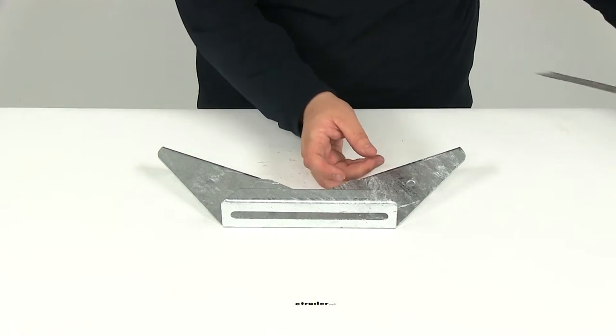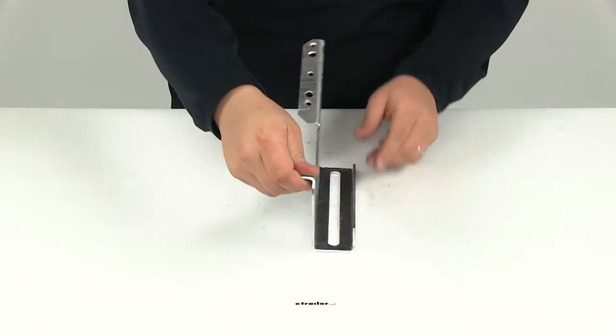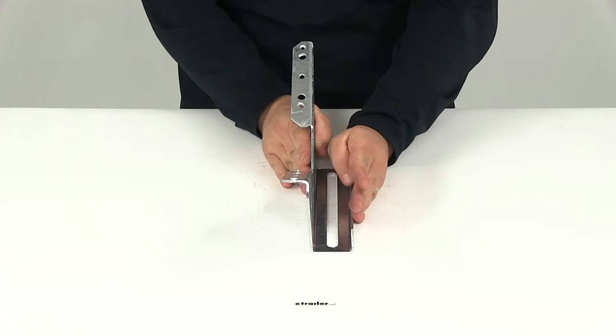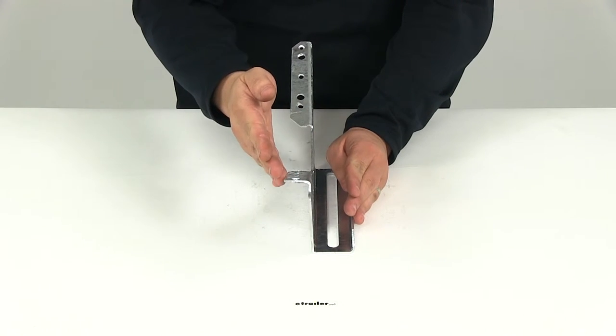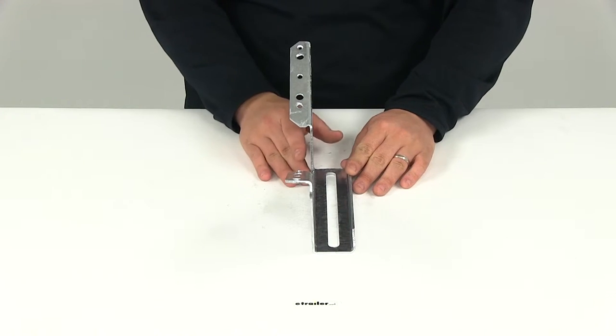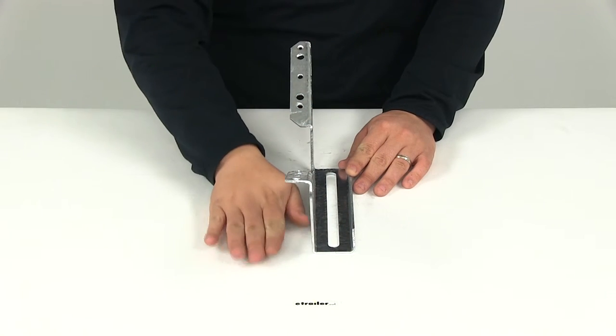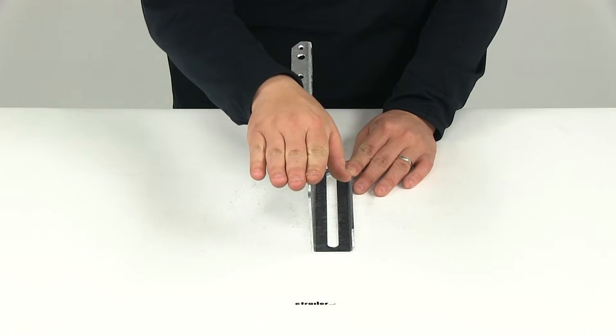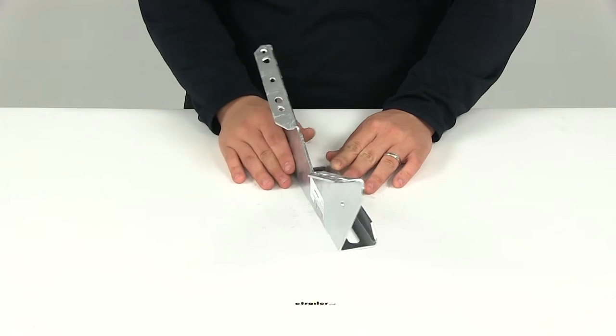The overall width, measuring from the back of the bracket to the front of the bracket up here, gives us a width or depth of three inches. The overall height from tabletop to the top of the bracket measures about six inches tall.